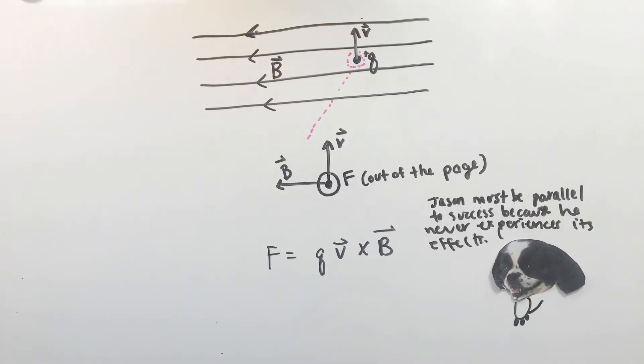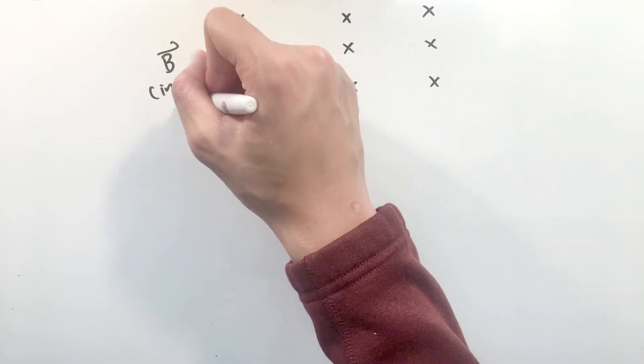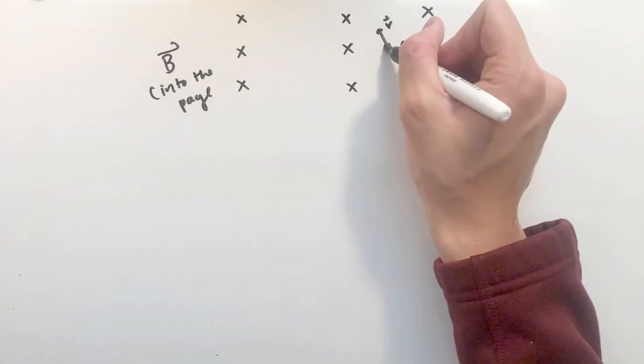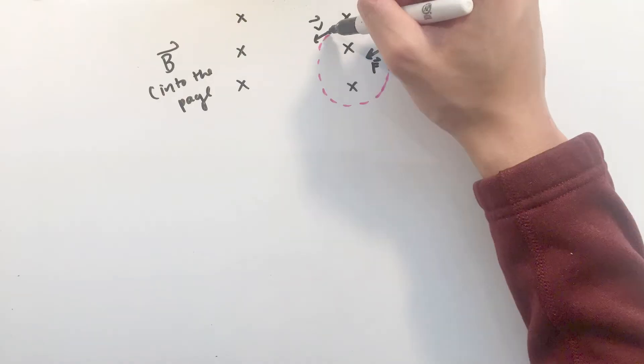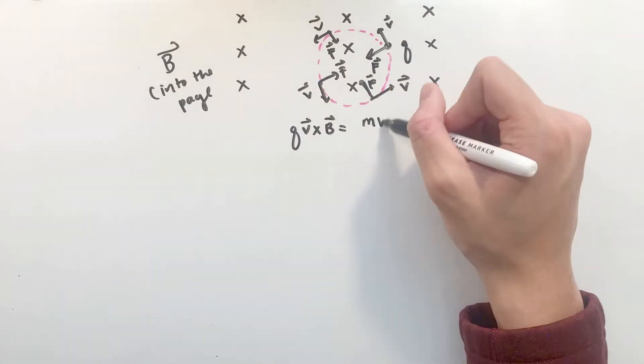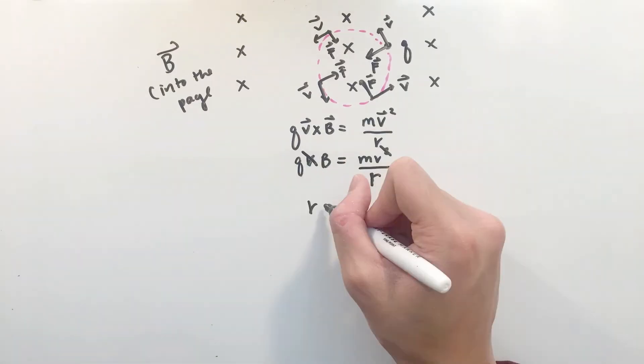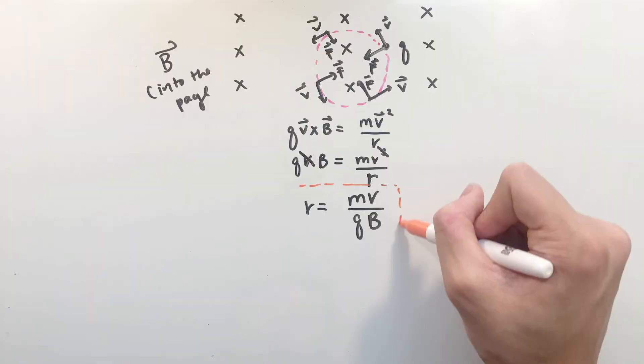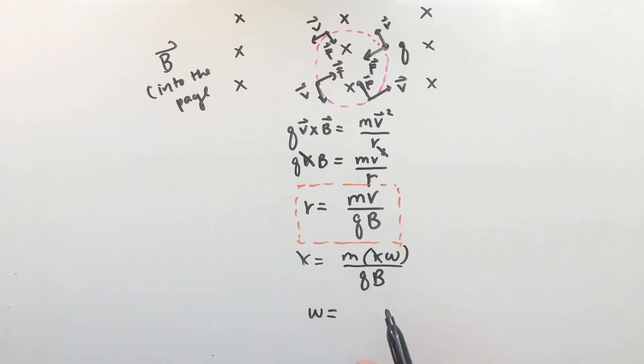Because the cross product produces a force always orthogonal to the velocity vector, the Lorentz force acts as a centripetal force for charged particles moving through magnetic fields, making them move in circles. Equating the centripetal force to the Lorentz force, it's not hard to find quantities like the radius of curvature of the particle, or angular frequencies of orbits.